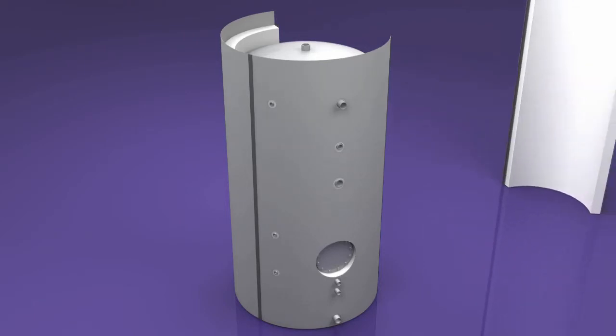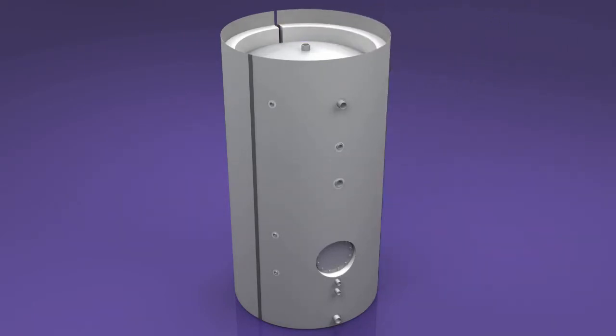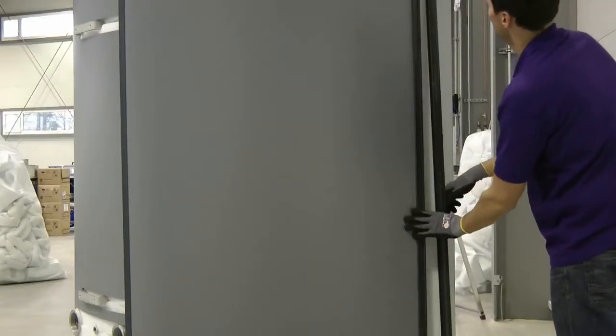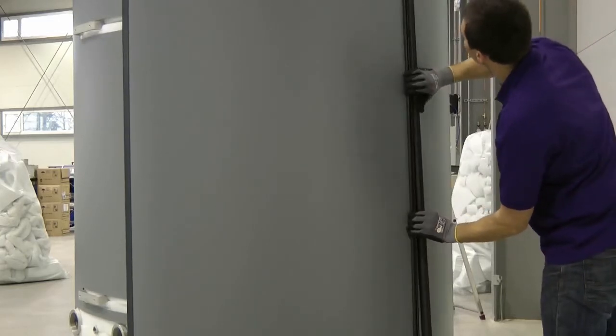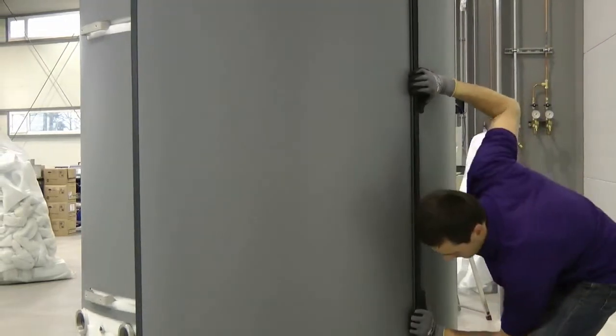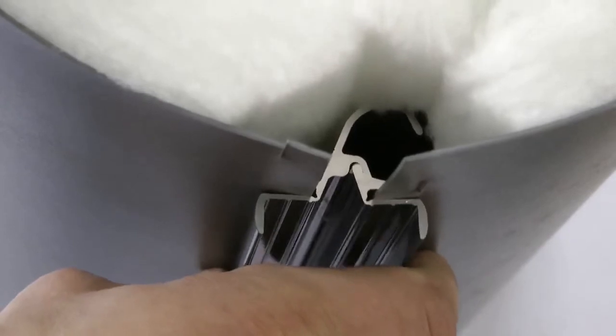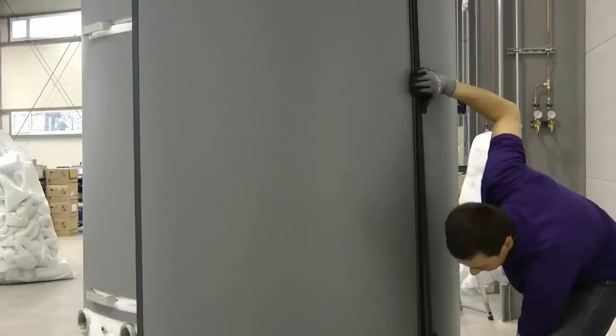Once all fiber fleece coating parts are mounted and stuck together, they will be closed with patented aluminum closure strips at the end. This works with a slight press of the strip. Just as easy as closing the strips, they can be opened again.